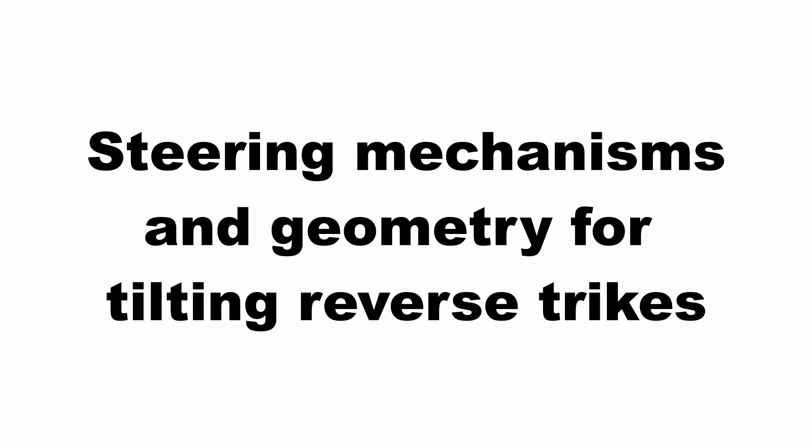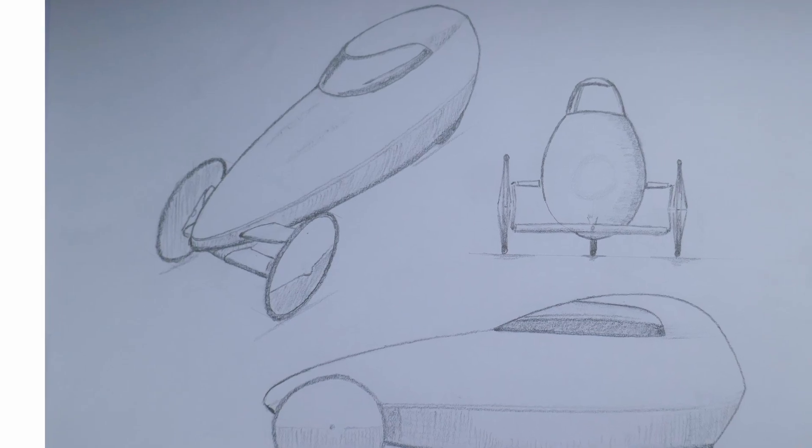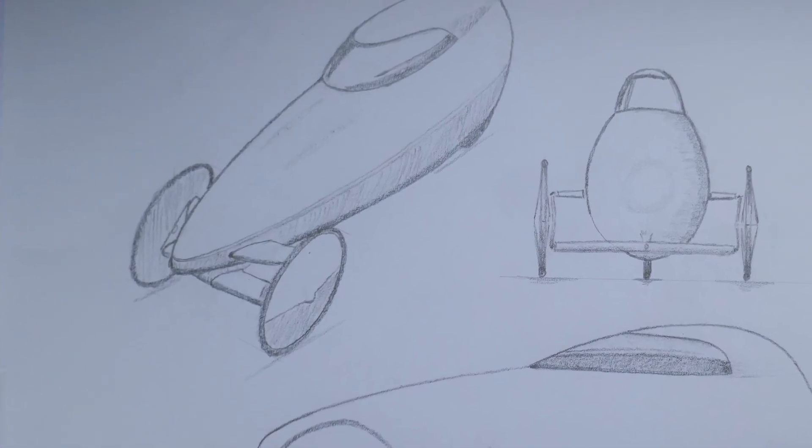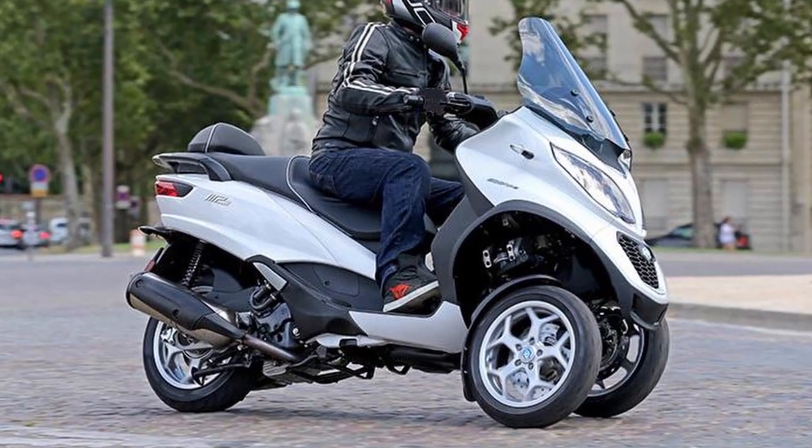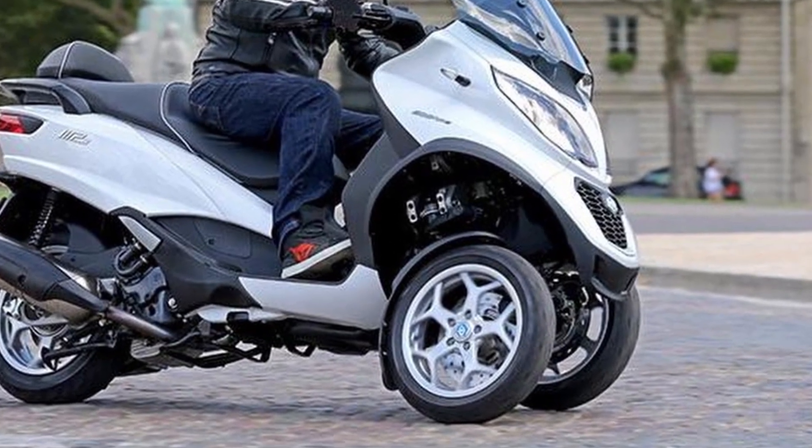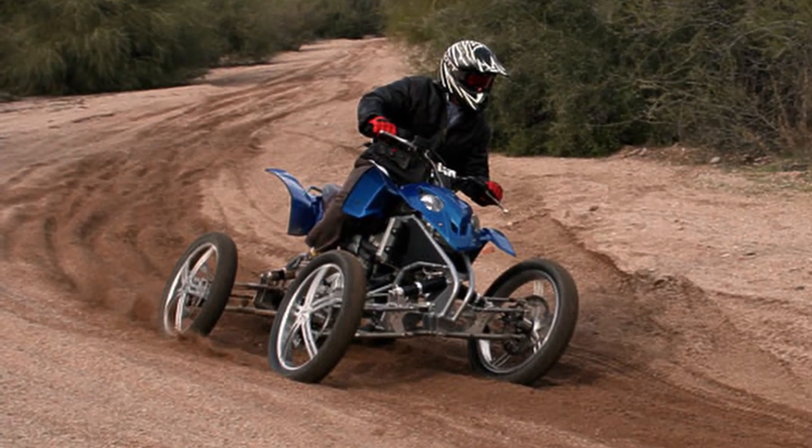Hello and welcome back to Metal Machine Shop. This time I'm going to look at the steering mechanism and geometry for a tilting reverse trike motorcycle or velomobile. By reverse trike I mean one that has the two steered wheels at the front, sometimes referred to as a tadpole trike. This video would also apply to tilting four-wheeled vehicles.